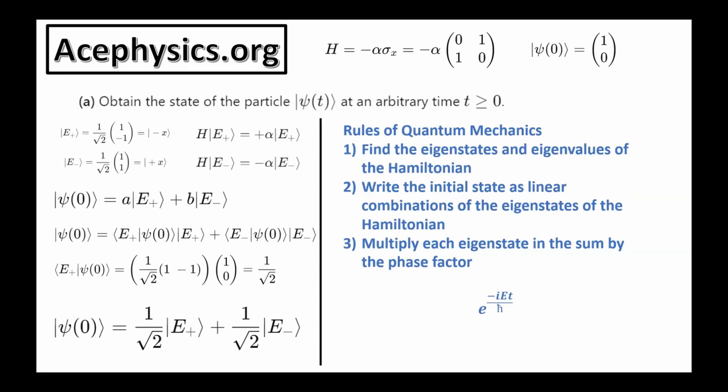While these rules may seem abstract at first, consider them akin to the rules of classical mechanics such as applying Newton's laws or Lagrange's equations. Once you accept these rules as the framework for solving quantum problems, your understanding will deepen. The first step is finding the eigenstates and eigenvalues of the Hamiltonian. The two eigenstates are: E plus equals 1 over root 2 times (1, -1), and E minus equals 1 over root 2 times (1, 1). The eigenvalue for E plus is an energy of plus alpha, and the eigenvalue for E minus is an energy of minus alpha.